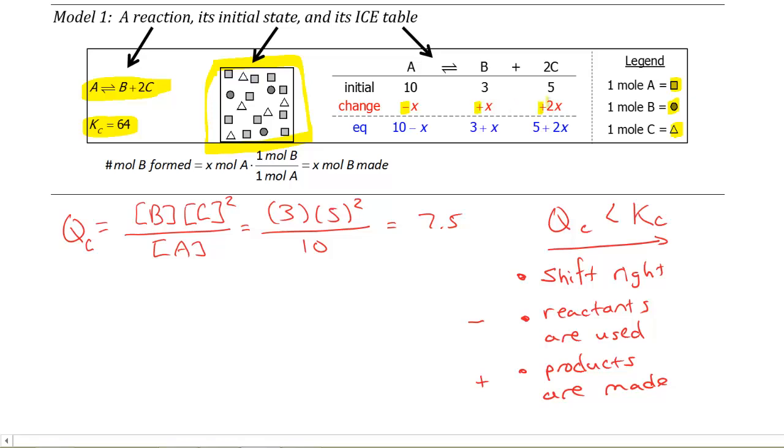If you take a look over here in the change row, the reactants all have a negative sign and the products all have a positive sign associated with their change. The only thing left that we have to find is, where did I get this x, x, and 2x?